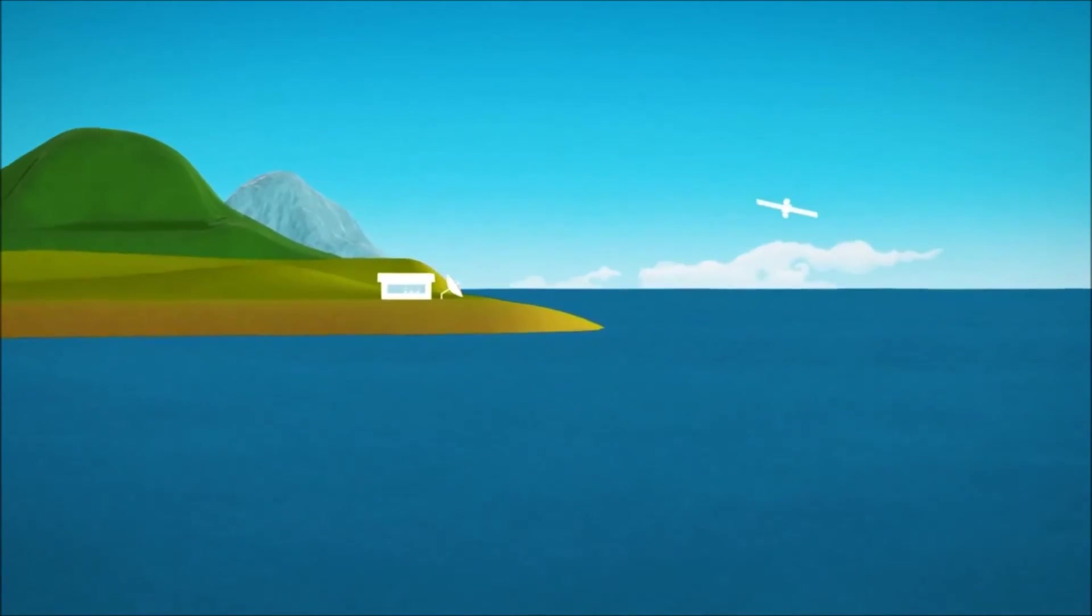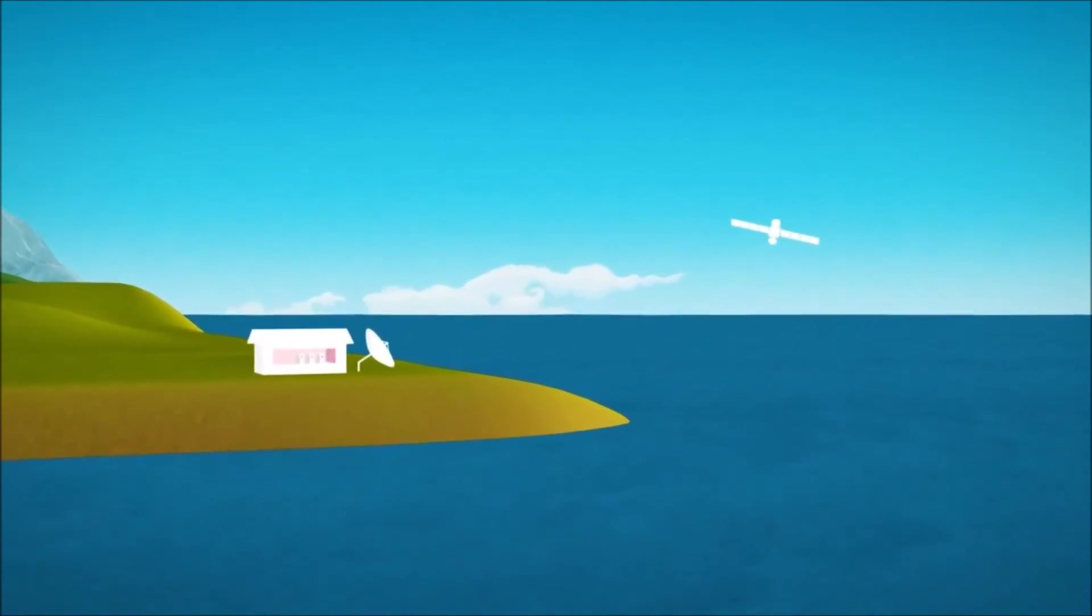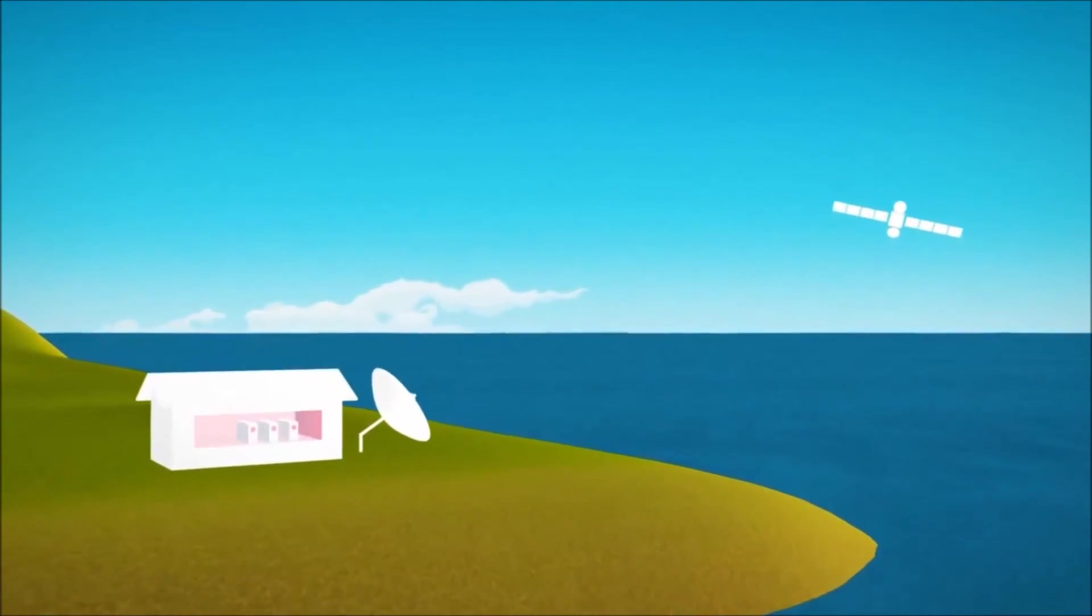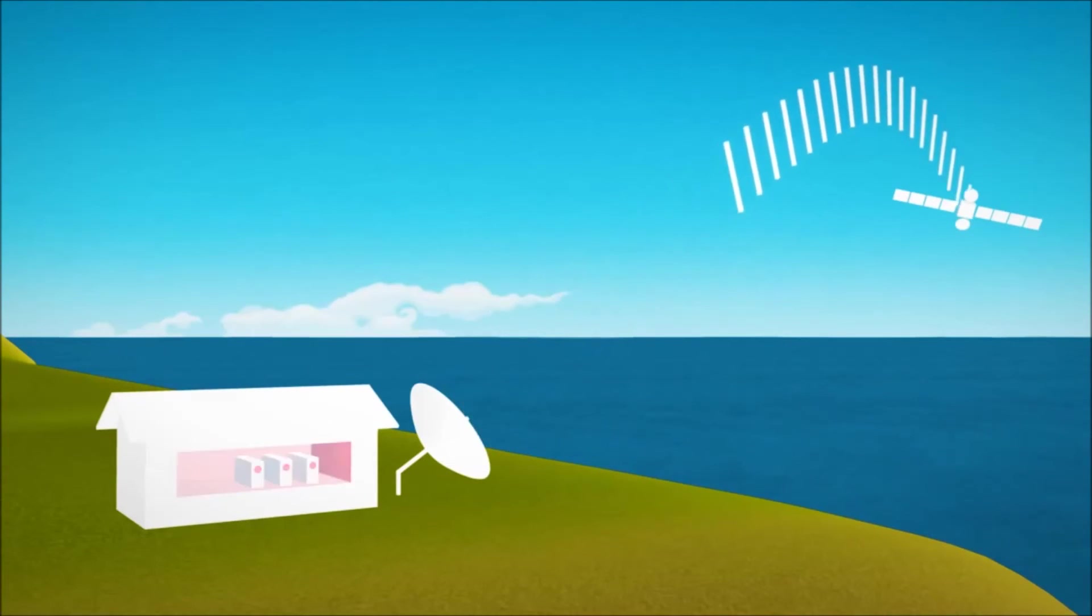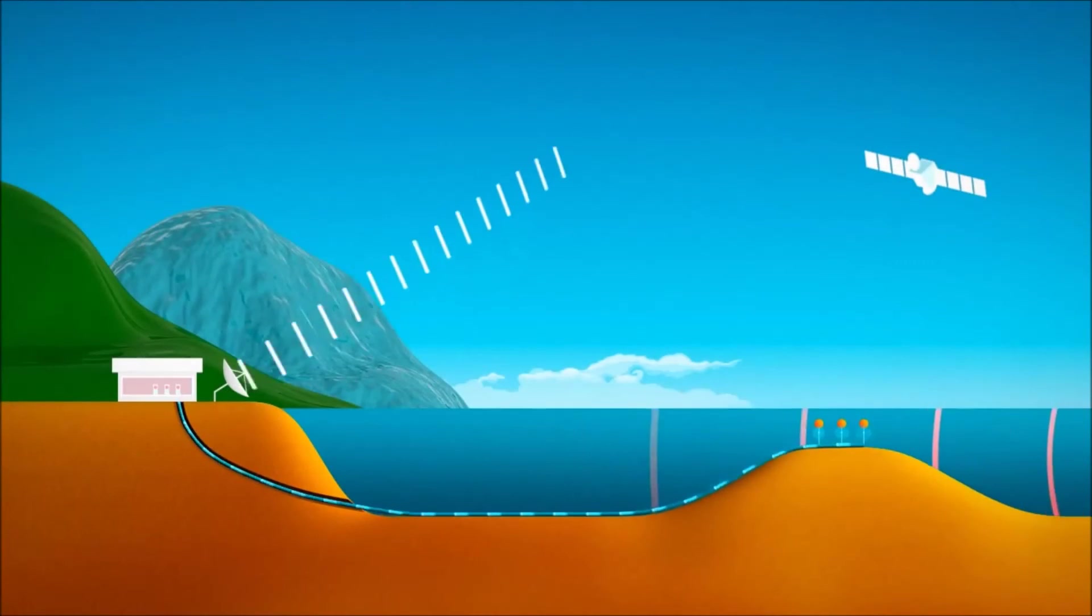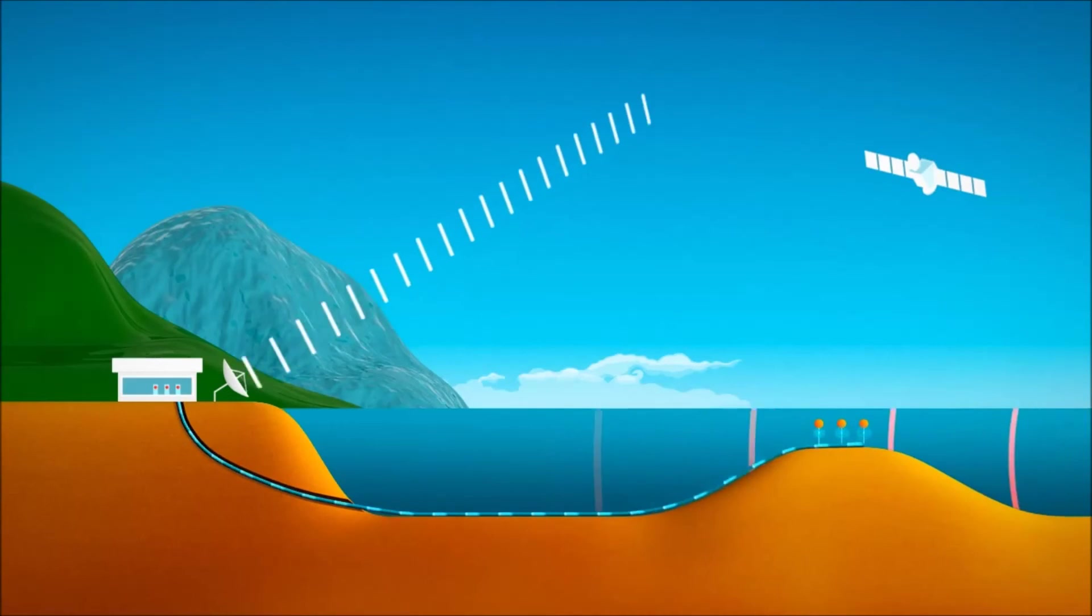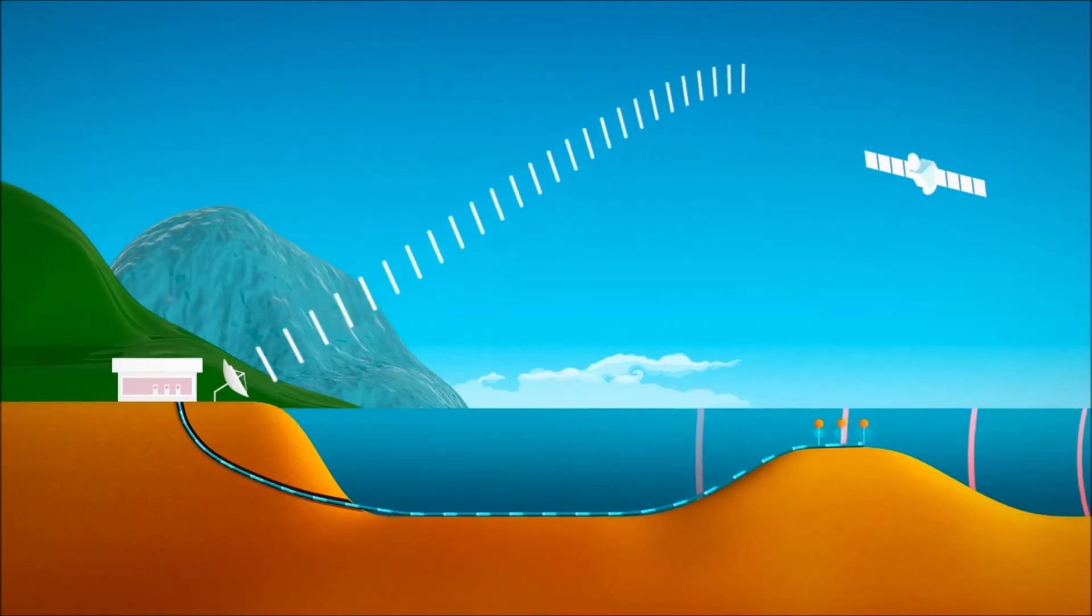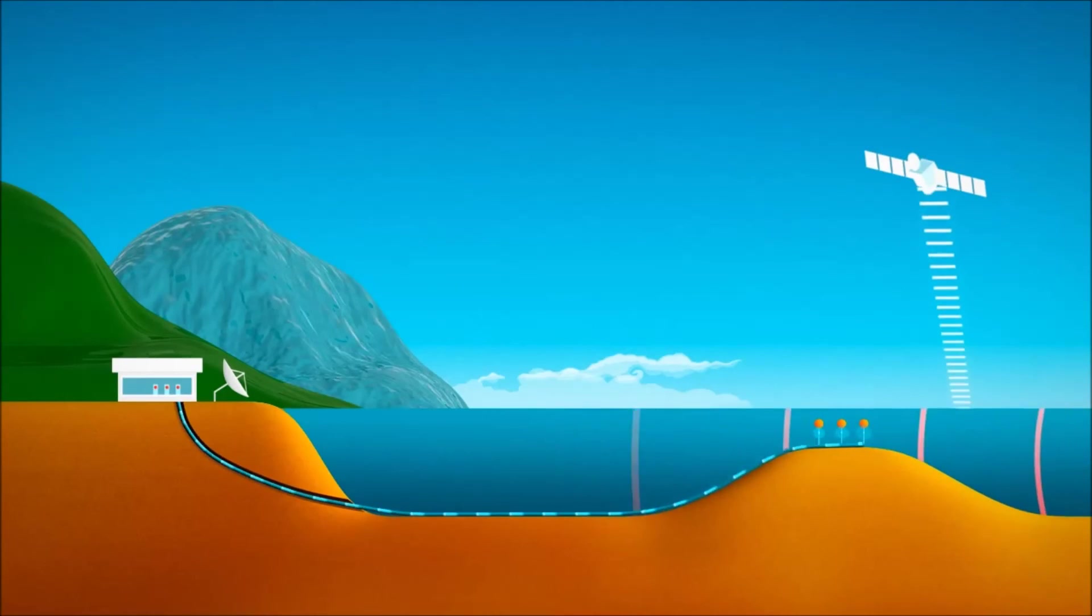Computers at the shore facility record the signal and prepare it for satellite transmission. Dish antennas transmit the data via satellites to the CTBTO in Vienna. All this is done automatically and takes only a few seconds. So here we see it again. Sound waves from an event are registered by the hydroacoustic sensors deep underwater, transmitted as electrical signals via cable to a shore facility and then sent via satellite link to the CTBTO in Vienna, where the data are analyzed to clarify the nature of the event.